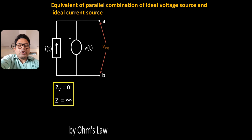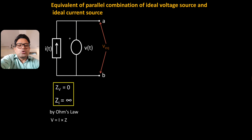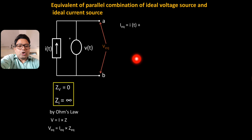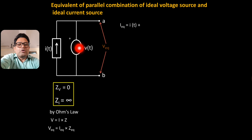Now let us find the total or equivalent voltage. By Ohm's law, V = R × Z, so the equivalent voltage VEQ will be equal to the equivalent current IEQ multiplied by the equivalent impedance ZEQ. Now let us find the values for IEQ and ZEQ. The equivalent current is the sum of the currents from the ideal current source and the ideal voltage source. The current from the ideal current source is already known, that is I(T).